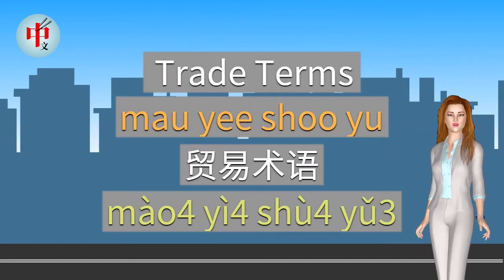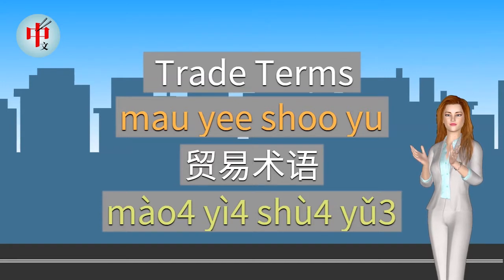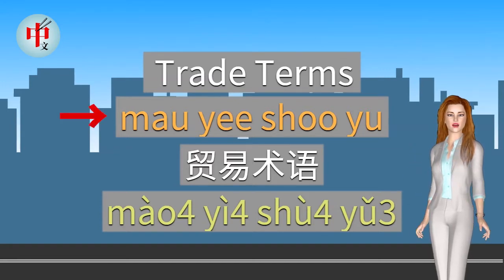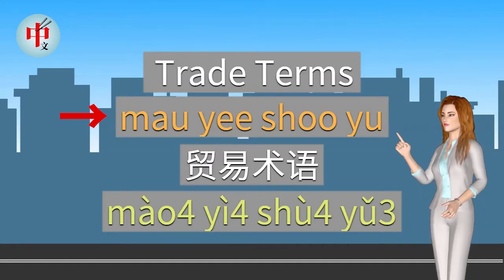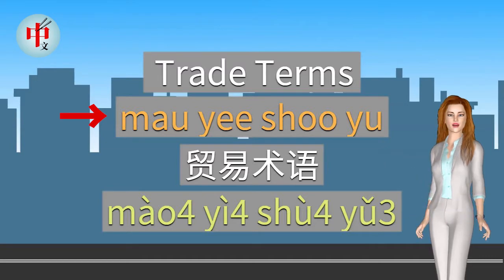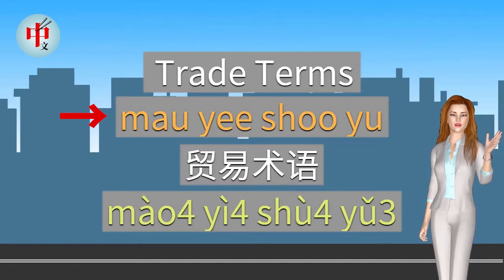Our lesson will be presented in the following format. The word at the top is English. Then the words below in orange are the romanization, which is how to pronounce Chinese phonetically. Romanization is pronouncing Chinese words using English phonetics. Our style of romanization consists of Yale romanization, as well as the system we have compiled through the years of teaching non-Chinese speakers.